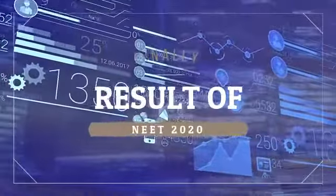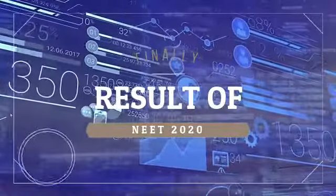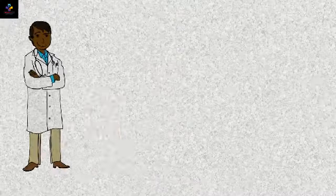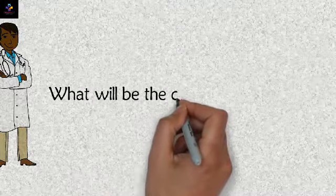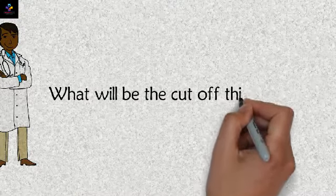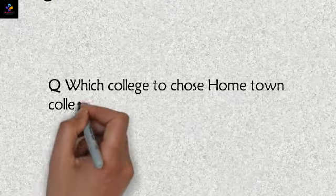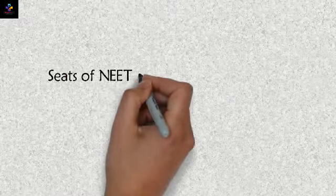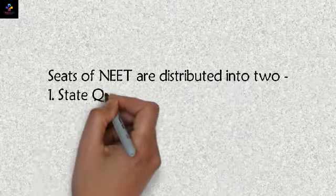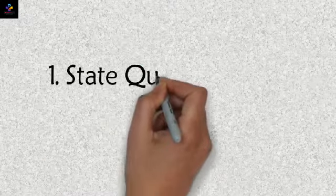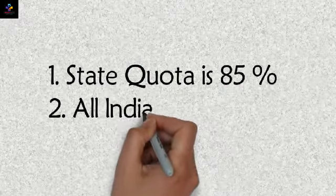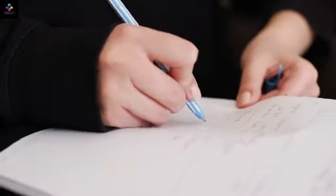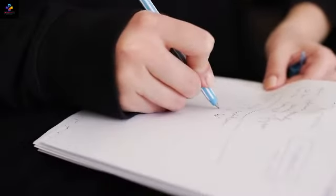The result of NEET 2020 is announced. Now the question is: what will be the cutoff this year, and which college to choose — the hometown college or the college which is known to be the best? The seats of NEET are distributed into two categories: first is state quota, the other is all India quota. The state quota is 85 percent of the total seats and the all India quota is 15 percent of the total seats.